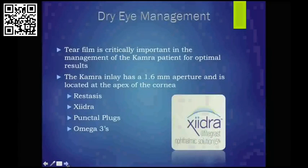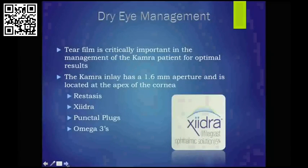Dry eye management is key. You have to realize the anatomy — the inlay is located at the apex of the cornea, and it's a 1.6-millimeter aperture. If that area is compromised, then vision is going to be compromised. The camera inlay has to have that surface optimized. With the use of Restasis, Xiidra, punctal plugs, and omega-3s, we're able to optimize the ocular surface. We use punctal plugs on all of our camera patients — a 30-day dissolvable one placed in the inferior punctum at the time of surgery.